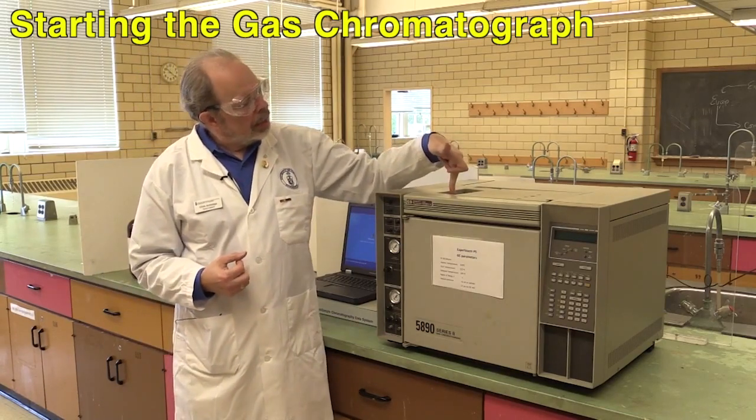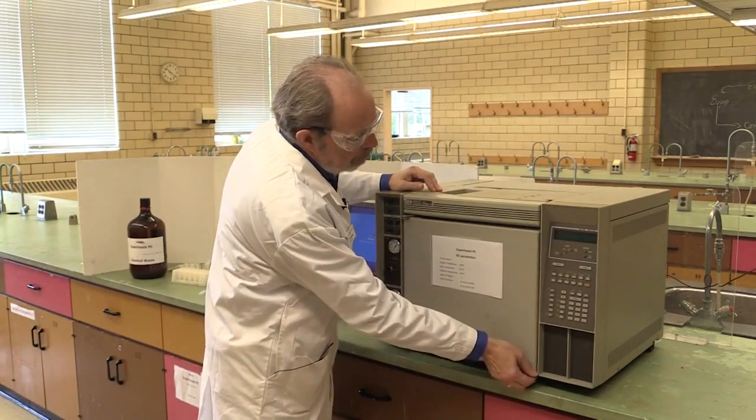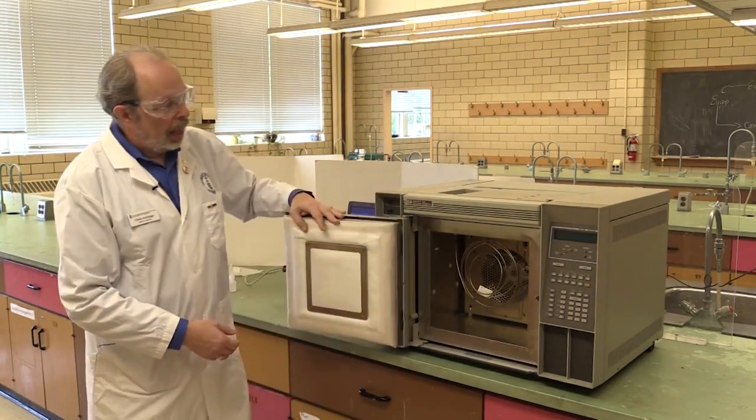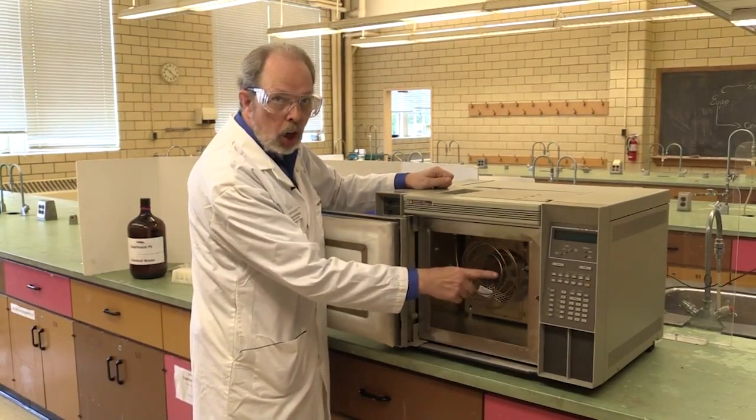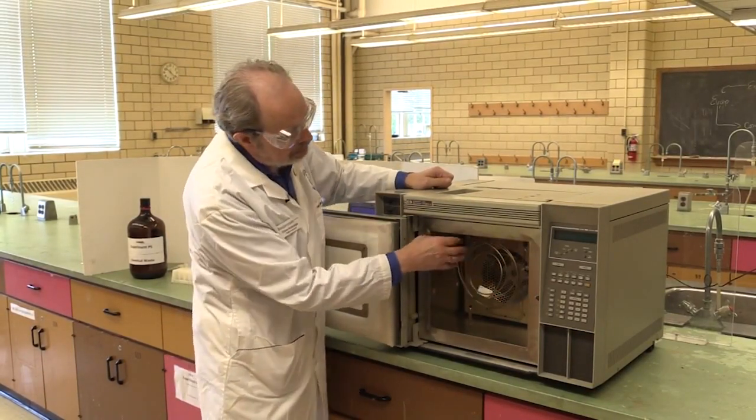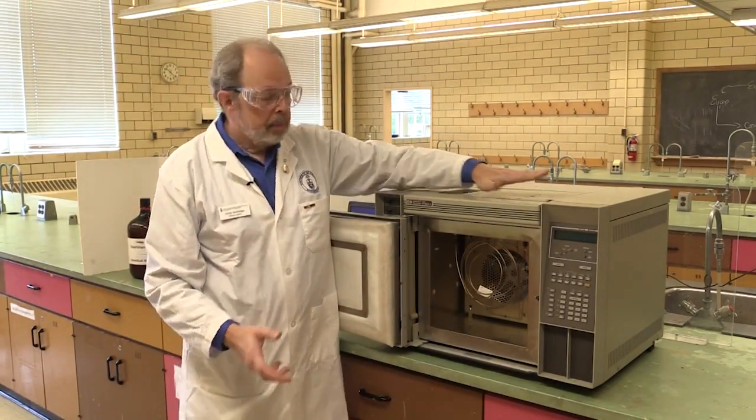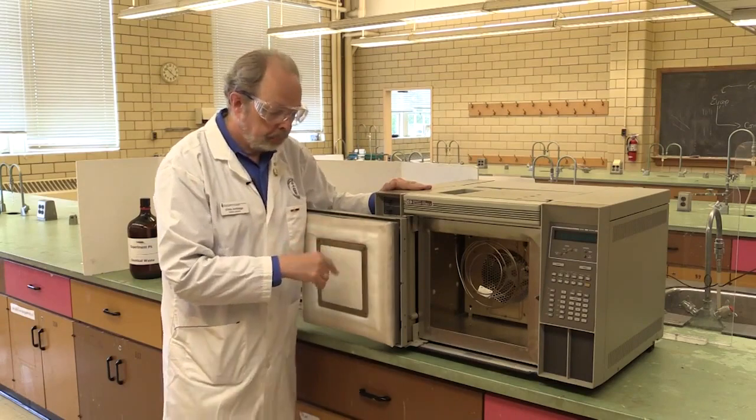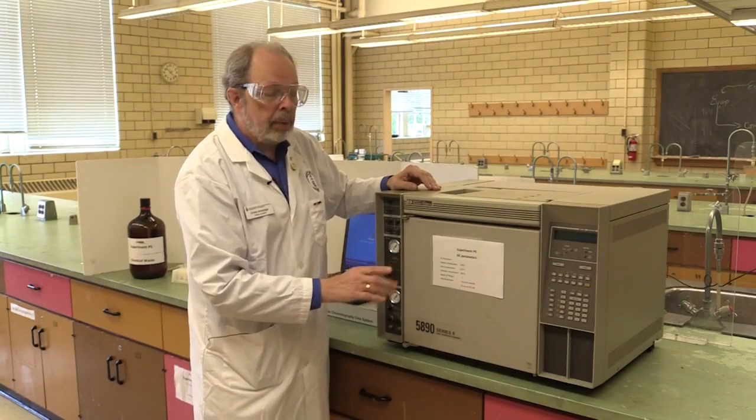The machine injects your sample here, and inside we have an oven. You inject your sample. It goes in and around the column, and in the column the separation actually takes place. At the end of the column it goes up here, and there is a detector underneath. Now, you need to have all this at appropriate temperatures, so we will set that right now.